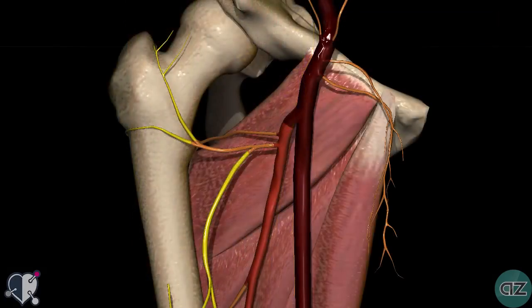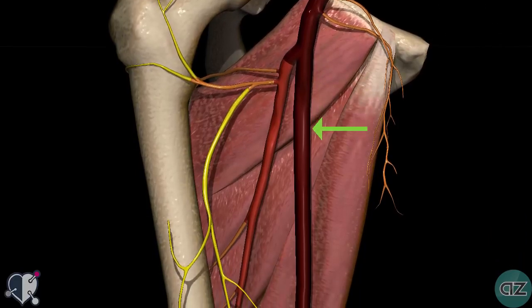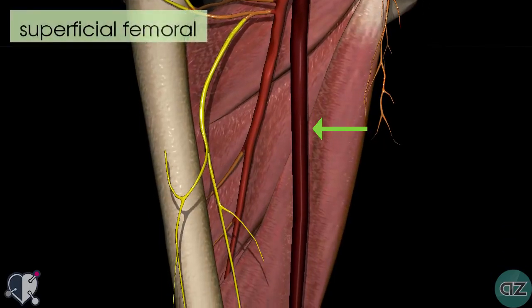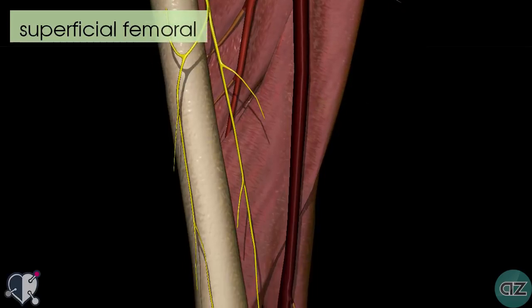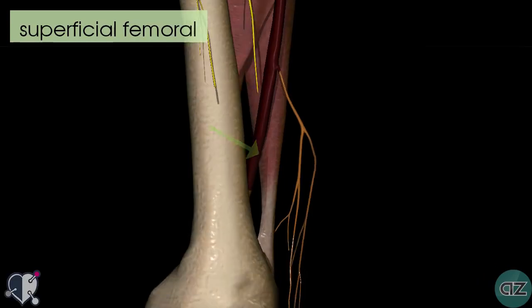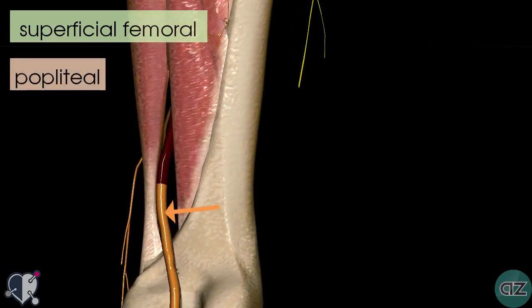We've now looked at the branches of the common femoral artery and the deep femoral artery. After the deep branch is given off, the continuation is called the superficial femoral artery. Following it down to the distal femur, the superficial femoral artery passes through a hole in the adductor magnus muscle known as the adductor hiatus, where it becomes the popliteal artery as it enters the posterior compartment.